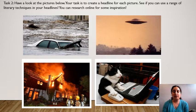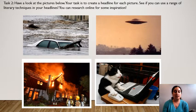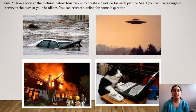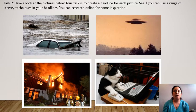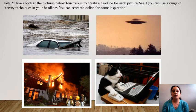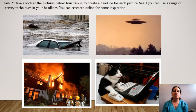Moving on to the next task — I hope you found that one really enjoyable, actually researching and looking for headlines. I'm purposely not going to go through any answers with you now because I want you to send me your work so I can see it for myself. Number two: have a look at the pictures below. Your task is to create a headline for each picture — see if you can use a range of literary techniques in your headlines. You can research online for some inspiration. There are four very different pictures: a car that has been stuck in the floods, a flying spaceship UFO in the sky, a house that's on fire, and a cat who is working on a laptop. You can choose any headlines you want for those four pictures.